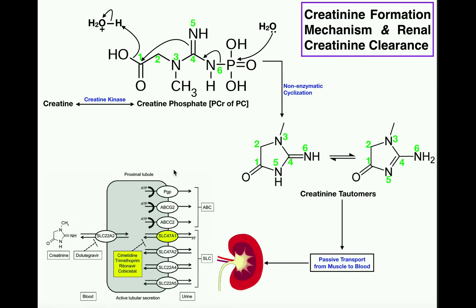Let's look at how creatinine is formed from creatine. Particularly in skeletal muscle, the reaction of creatine kinase is very important. Creatine can be reversibly phosphorylated to make creatine phosphate, and the phosphate on this creatine phosphate is going to come from ATP. So creatine plus ATP can be converted into creatine phosphate plus ADP.